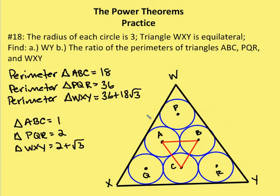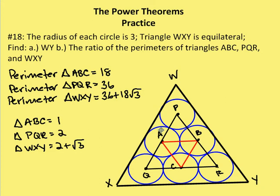For part B, the perimeter of triangle ABC: each side is 3 plus 3 equals 6, so the perimeter is 18. The perimeter of PQR uses four radii per side — 3+3+3+3 equals 12 — so three times 12 gives 36. WY is 12 plus six root three, multiplied by three gives 36 plus 18 root three. The ratio of perimeters ABC to PQR to WXY is 1 to 2 to (2 plus root 3).